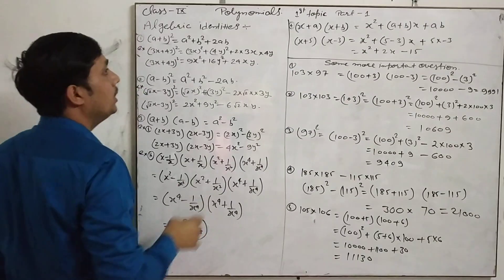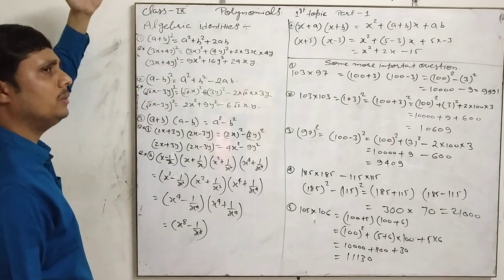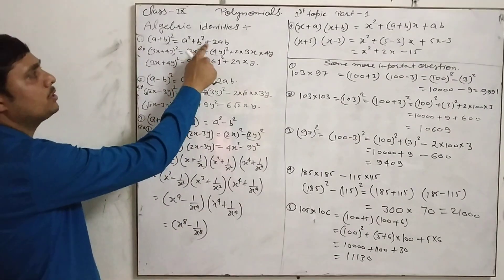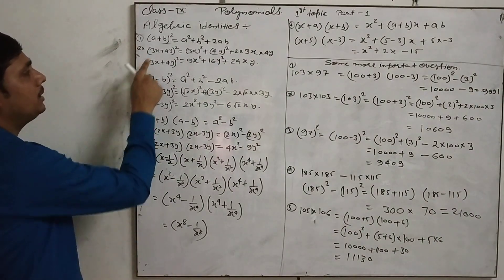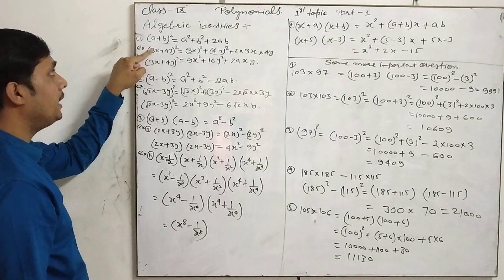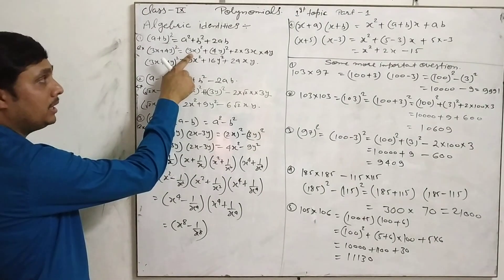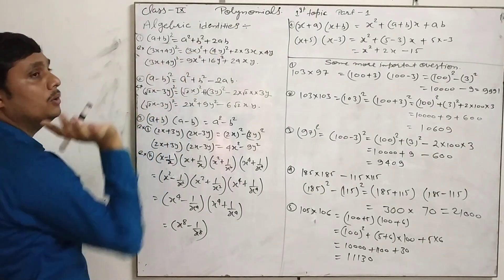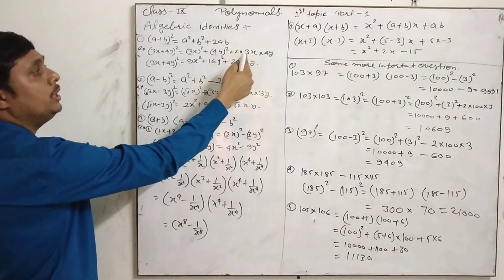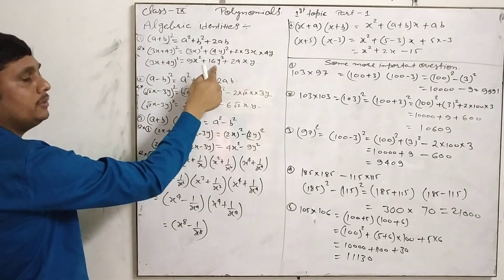The first identity is (a + b) whole square, which we have already taught in 8th class: a squared plus b squared plus 2ab. For an example, taking (3x + 4y) whole square — on the place of a is 3x, on the place of b is 4y. Substituting: (3x)² + (4y)² + 2×3x×4y = 9x² + 16y² + 24xy.